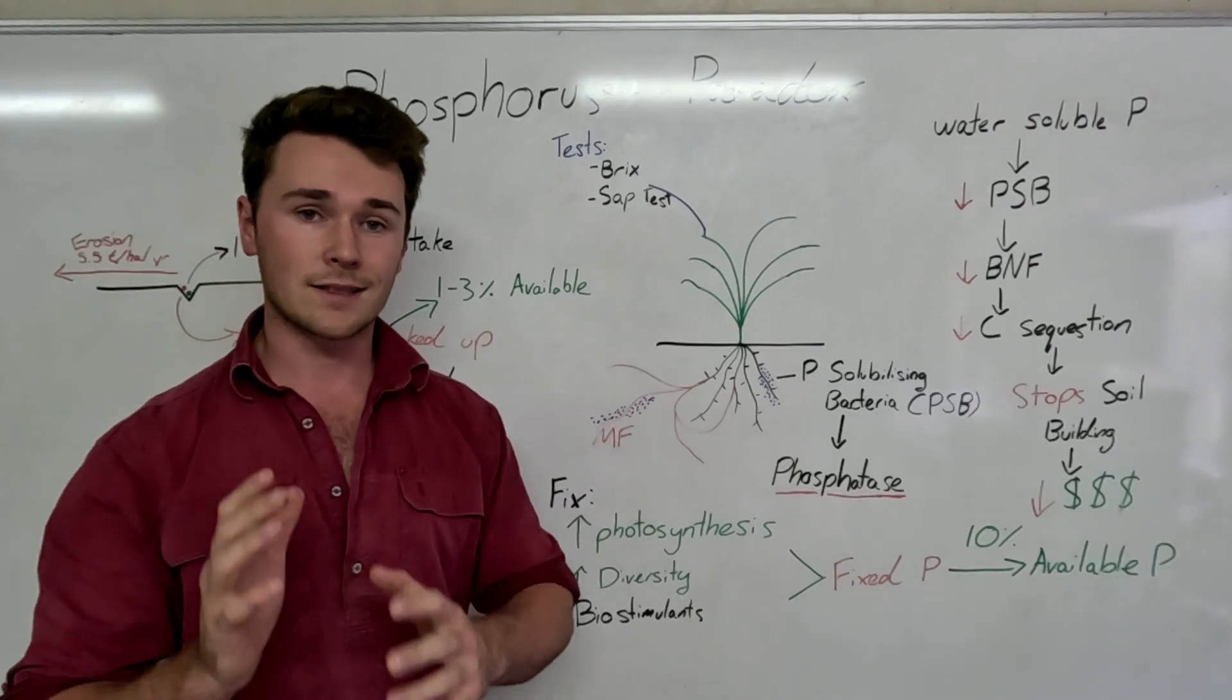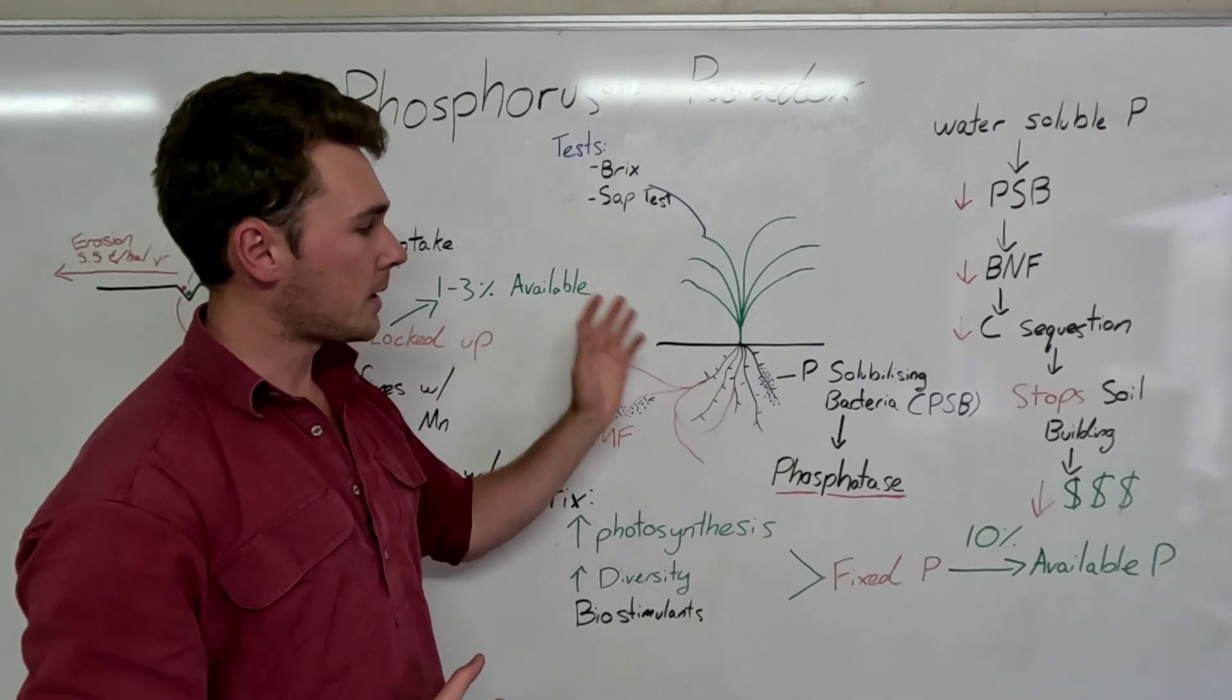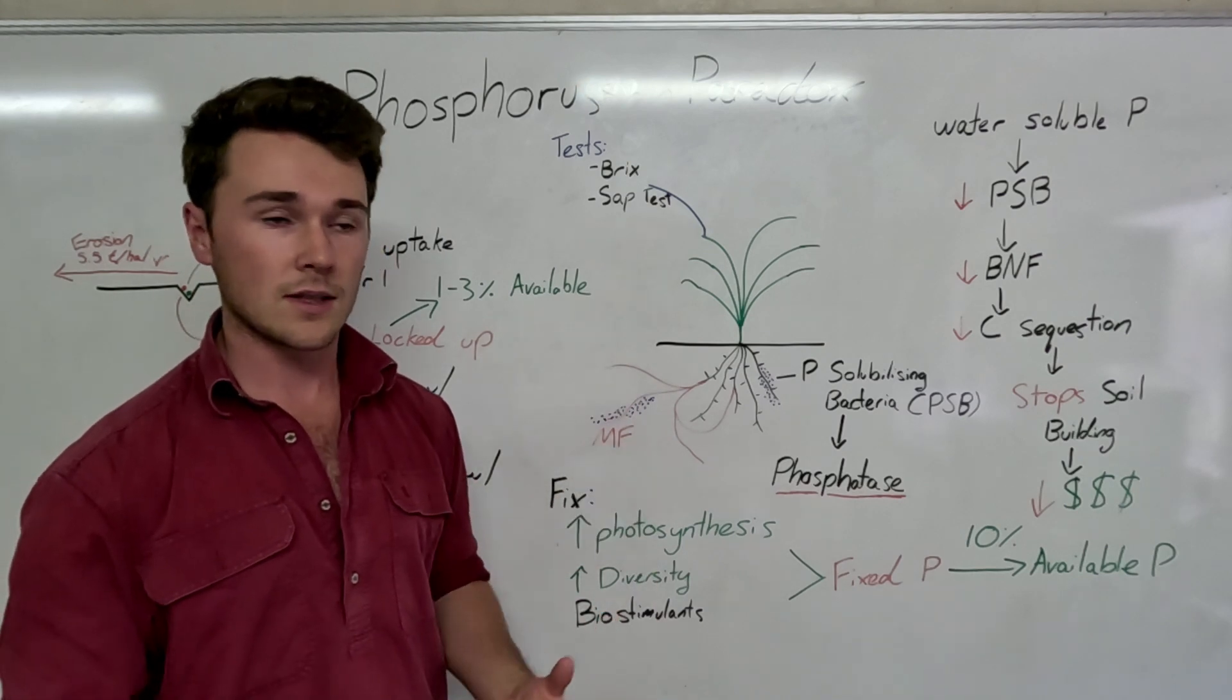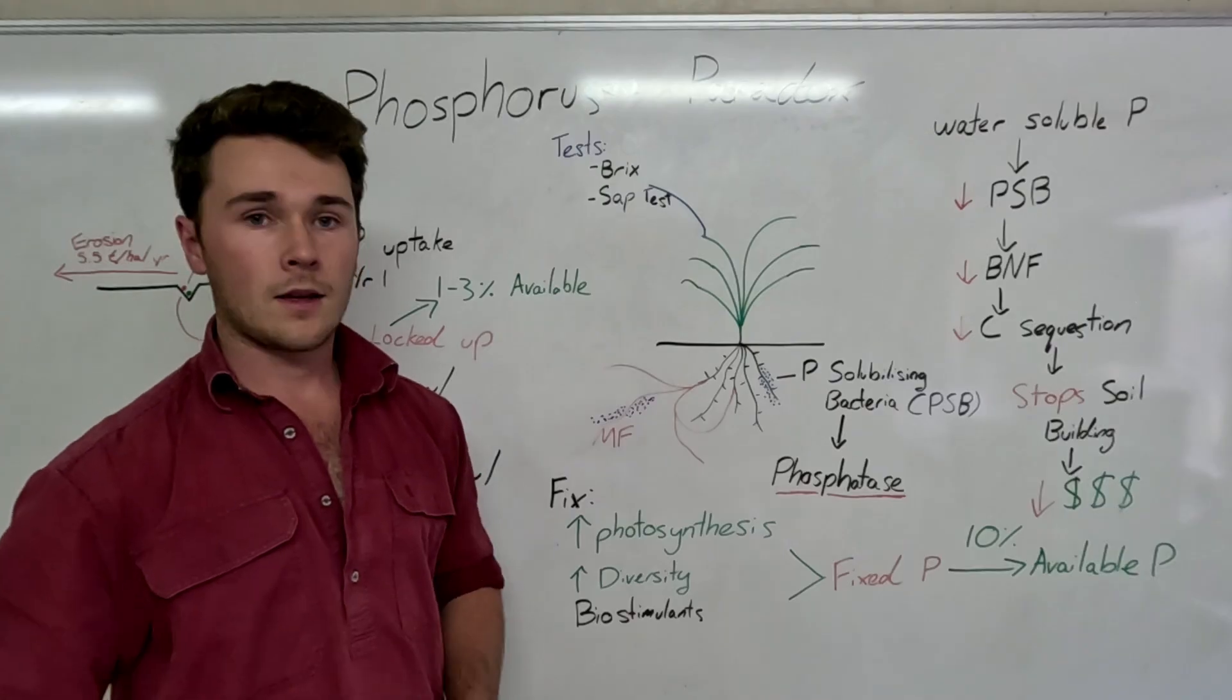And so it decides not to form any microbes and fungi relationships. Now the problem with that is that during a growing season, more and more phosphorus gets locked up. And now the plant is stuck with no phosphorus and no mycorrhizal fungi connections. So then it induces a phosphorus deficiency later in the season.